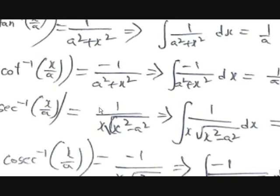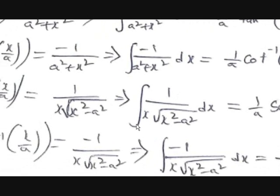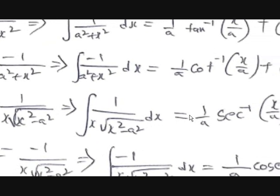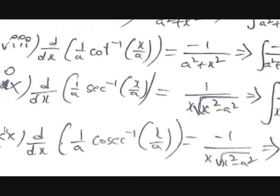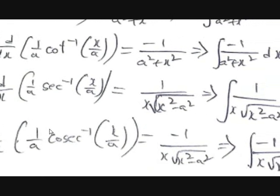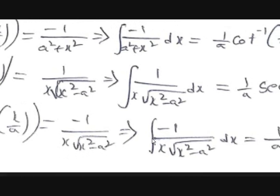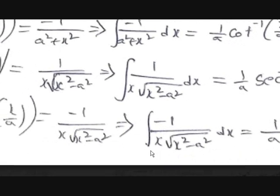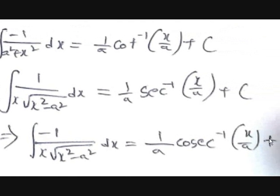And d/dx of (1/a) · sec⁻¹(x/a) equals 1 / (x · √(x² − a²)), so the integral of 1 / (x · √(x² − a²)) dx is equal to (1/a) · sec⁻¹(x/a) plus c. Finally, d/dx of (1/a) · cos⁻¹(x/a) equals −1 / (x · √(x² − a²)), so the integral of −1 / (x · √(x² − a²)) dx is equal to (1/a) · cos⁻¹(x/a) plus c.